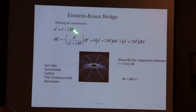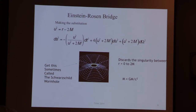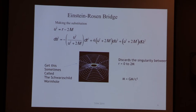So Einstein and Nathan Rosen, in 1935, published this paper. They did a little coordinate transform which, when you look at all the details, actually discards the event horizon and the singularity at the center. It's really a poor coordinate system, but they don't say much about it — there's one paragraph in the whole paper — where they don't call it a wormhole, they call it a bridge. They notice that it connects two pieces of space-time that are asymptotically flat on either side.